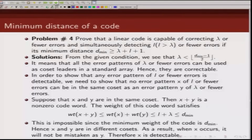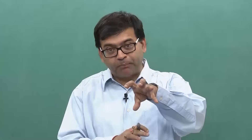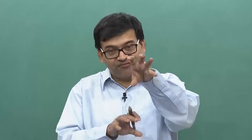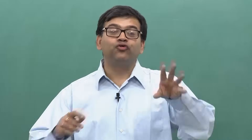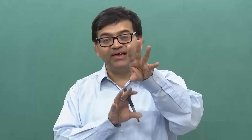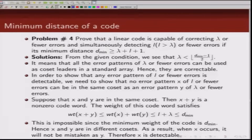Since x and y are not in the same coset, the error patterns of weight ≤ L and weight ≤ λ can always be placed in different cosets. Hence we can simultaneously correct λ errors while detecting L errors. This proves that a minimum distance of at least λ + L + 1 enables simultaneous error correction and detection.